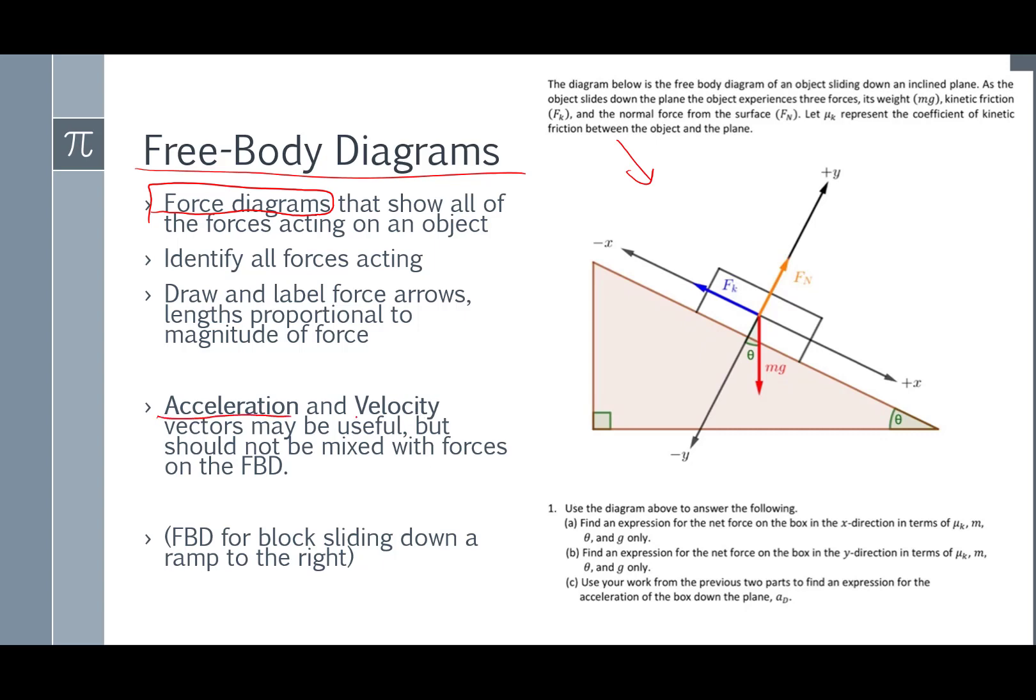Acceleration and velocity vectors may be useful, but since they're not forces, we don't put them on the free body diagram. If we want to put them in the diagram, we can put them off to the side. Since it's sliding down the plane, I might label that the velocity is down this way. It might make it easier to find some forces later.